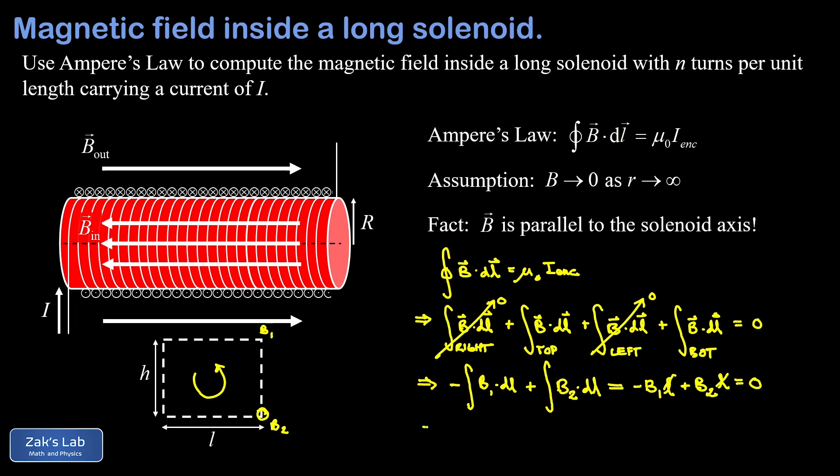We've shown that the magnetic field magnitude doesn't depend on distance from the solenoid axis — it must be constant for all distances outside. But we assumed the field vanishes at large r, so if it's constant outside and zero somewhere, it must be zero everywhere outside the solenoid. We've just established that B_outside actually vanishes: there is no magnetic field outside an idealized long solenoid.